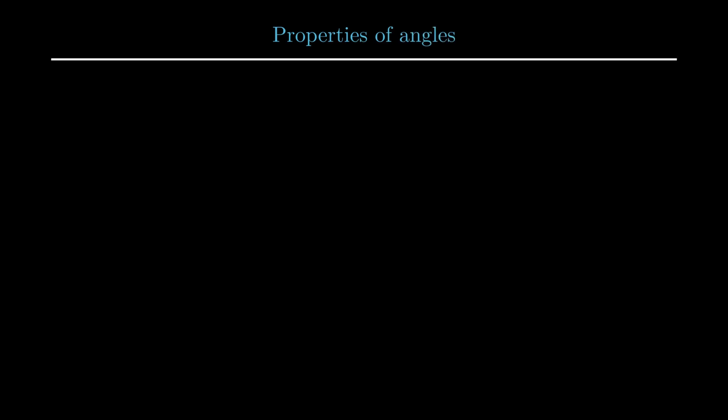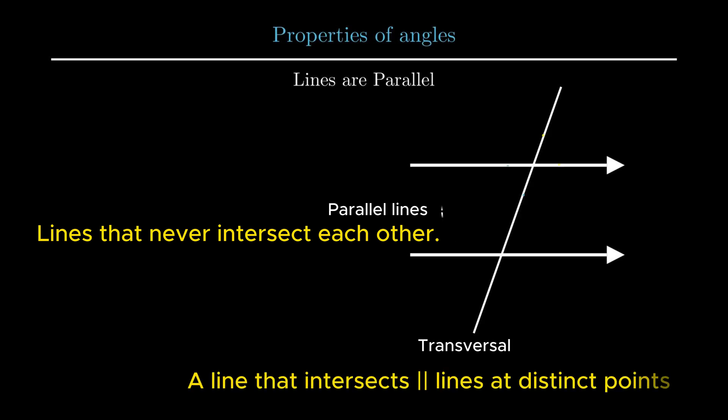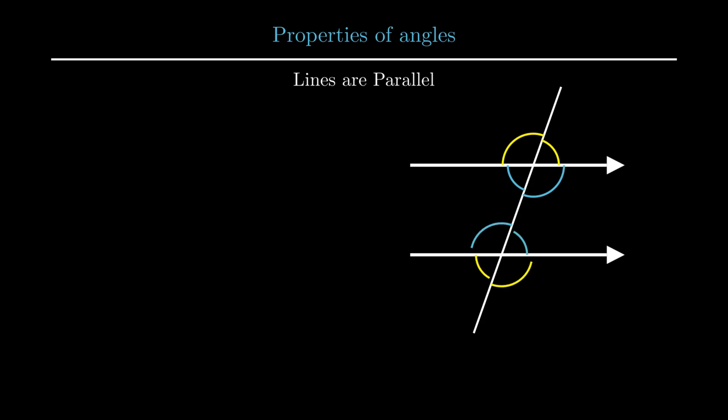Now we have some important properties related to angles when lines are parallel. To continue further, let us understand about parallel lines and transversal. Parallel lines are defined as lines that never intersect each other. Transversal is defined as a line that intersects parallel lines at distinct points resulting in the formation of angles. These angles are classified as interior angles which are formed between the parallel lines and exterior angles which are formed outside the parallel lines.